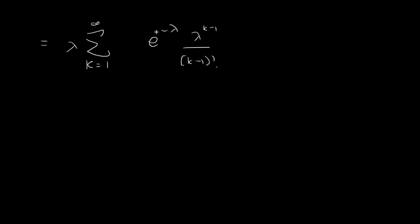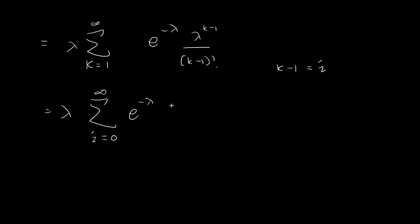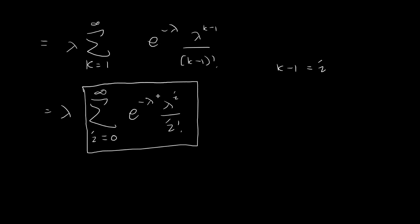If you look at the term inside, it actually looks very suspiciously like the probability mass function for the Poisson distribution. We do a bit of further rearranging by defining i as equal to k minus 1 — a new index term. Since i equals k minus 1, when k equals 1, i equals 0. So instead of the index k starting at 1, we use index i starting at 0 going to infinity, and k minus 1 is replaced by i, giving us lambda to the power of i divided by i factorial.